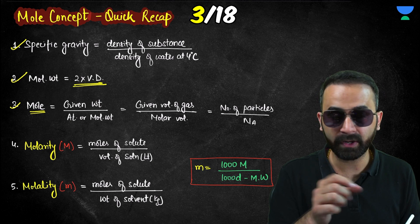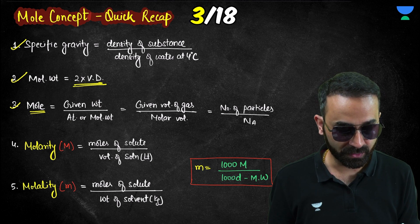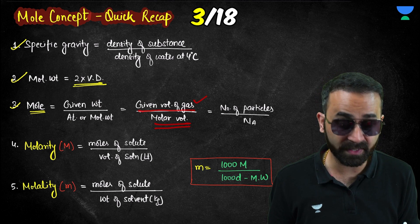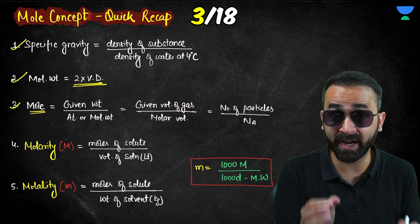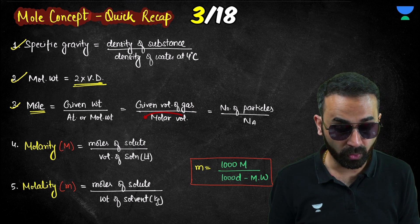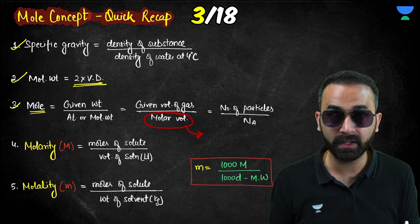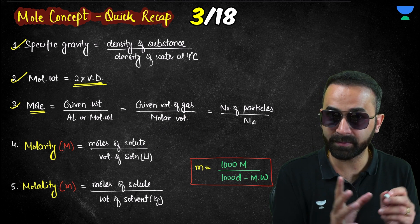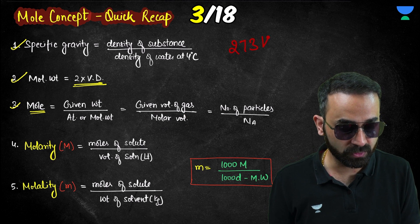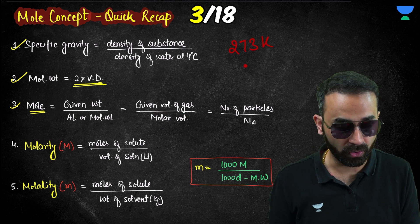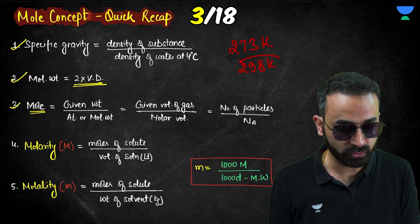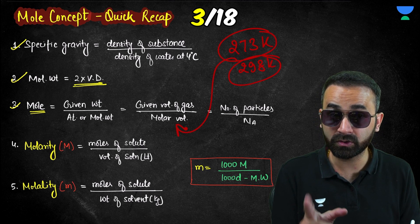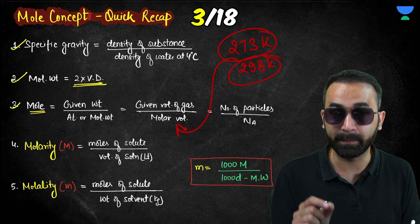If the volume of a gas is given, moles equal the given volume divided by the molar volume. Make sure the molar volume you use corresponds to the right temperature — questions may specify 273 K or 298 K, so your molar volume must match that temperature.